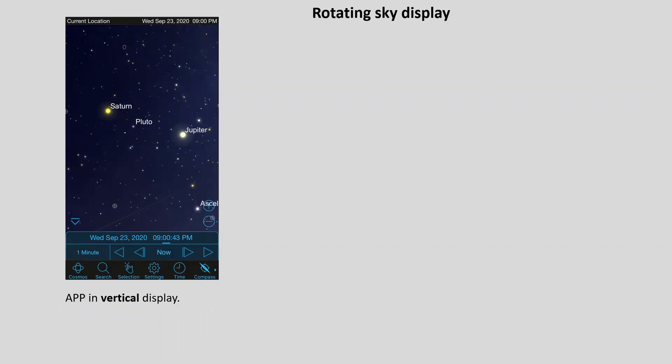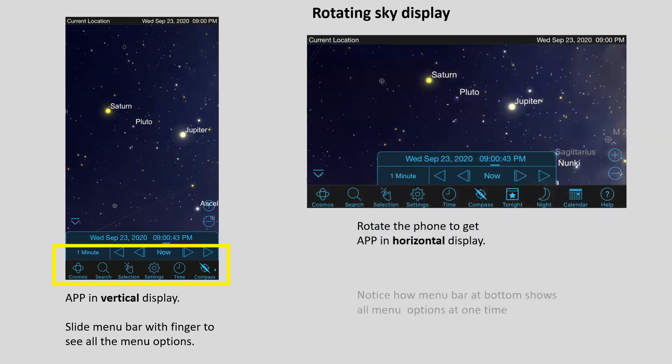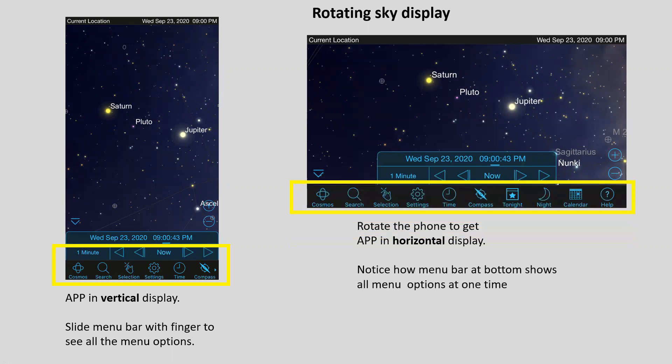There's two ways to look at the sky. Here you have a vertical display. You'll notice that at the bottom, there is a menu, a number of options. Cosmos, search, selection, settings, time, compass. In the vertical mode, I can't see all of those, but I simply can use my fingers. You see the little arrow on the right next to compass, and you can slide the menu back and forth. When you rotate the phone to get the horizontal display, now the entire menu comes into view. We will be using most of these menu options, but I wanted to point out that the Cosmos, which is on the left, is not used in this presentation. You have to pay a little bit more money to get that, and it's not applicable to this presentation.